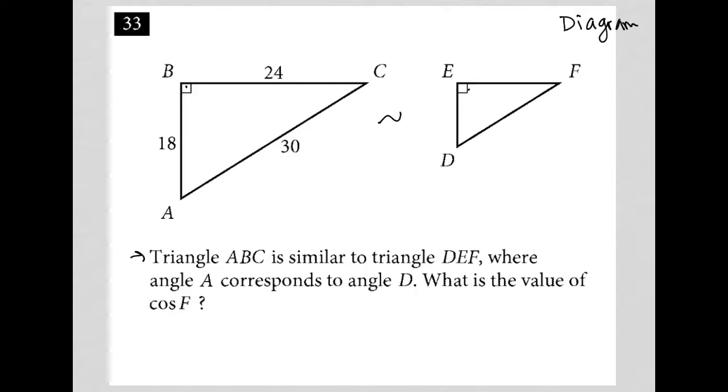All right, so that means that all the angles or the corresponding angles should be equal to each other and that the sides should be proportional to each other. So this would be like an 18 times some unknown X value. This would be 24 times X and this would be 30 times X. That's how I represent that they're proportional to each other.